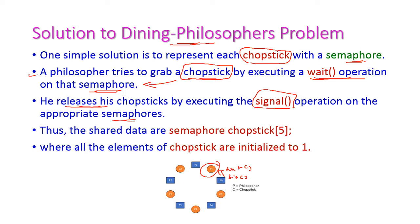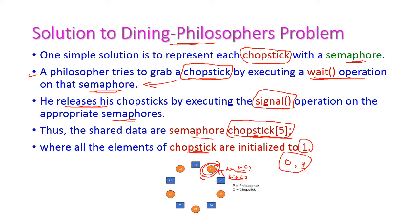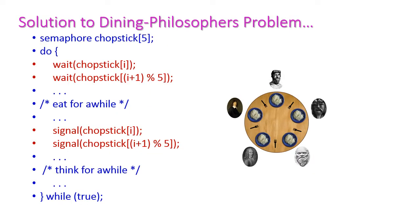While taking the chopstick, the philosopher will execute the wait operation for this chopstick, and for releasing, he will execute the signal operation for this chopstick. This will be continued for all the chopsticks. Hence, we have a semaphore chopstick array of 5, because we have 5 chopsticks. All the chopstick elements are initialized to 1, because the chopstick is either held or released — each chopstick has only 2 values, either 0 or 1. Here we have 5 chopsticks, that is an array of 5 chopsticks, each holding either 0 or 1.